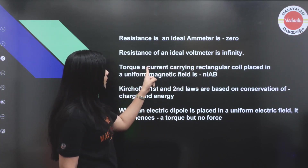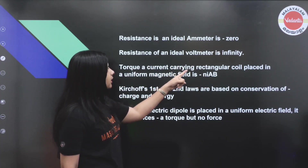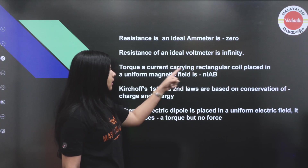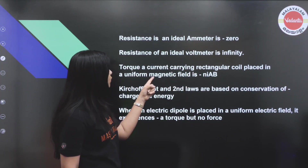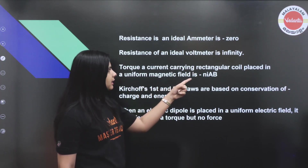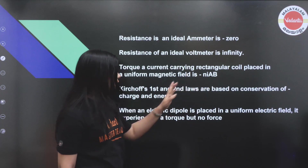Torque on a current-carrying rectangular coil placed in a uniform magnetic field is equal to NIAB.